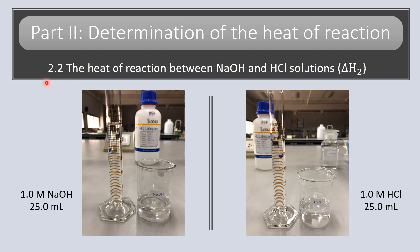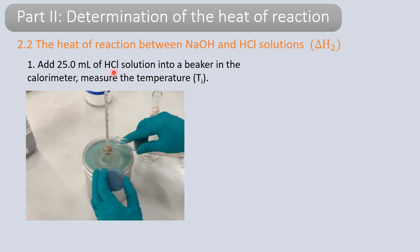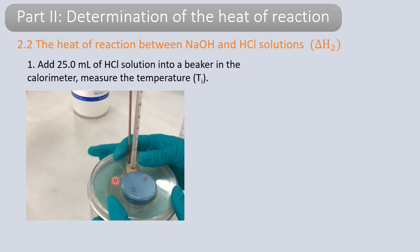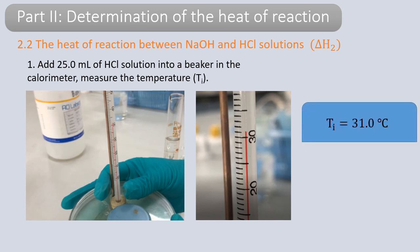Then move on to part 2.2: the heat of reaction between sodium hydroxide solution and hydrochloric acid solution — this will be our delta H2. We use 1 molar sodium hydroxide (25 ml) and 1 molar hydrochloric acid (25 ml). Add 25 ml of hydrochloric acid into the beaker in the calorimeter first and record the initial temperature Ti. The result: Ti is 31 degrees Celsius.